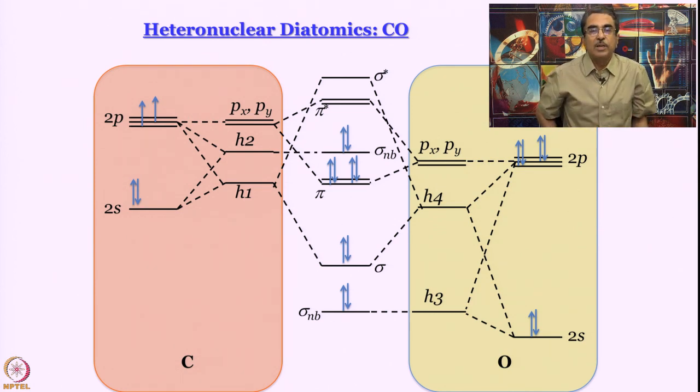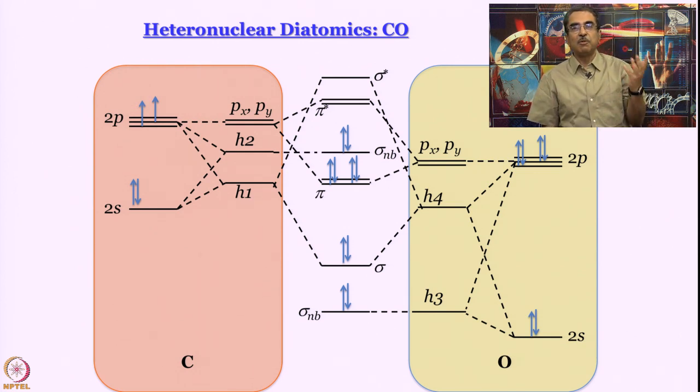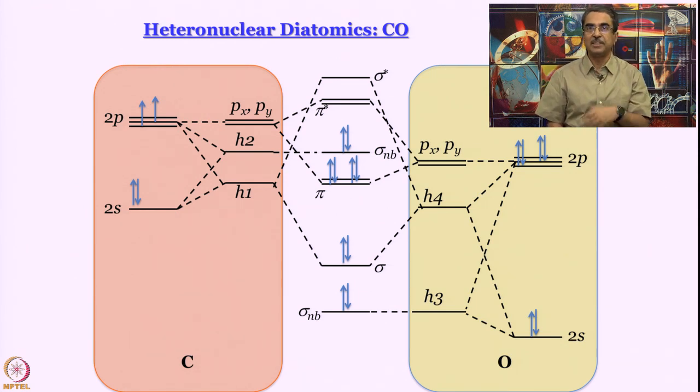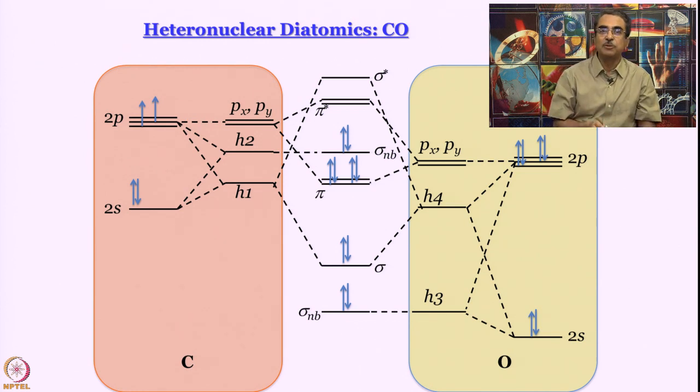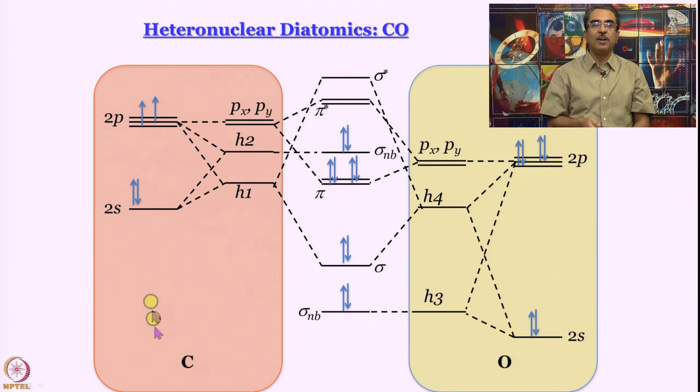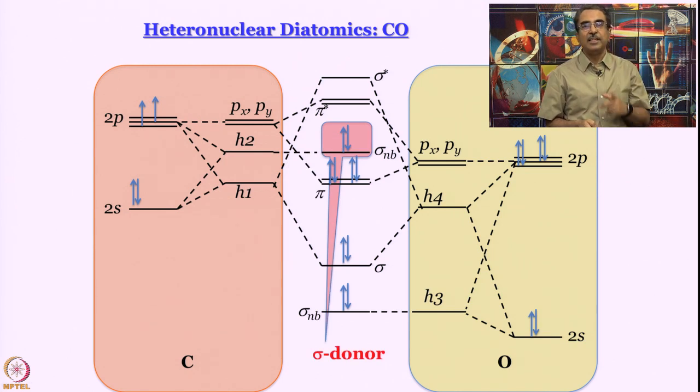Now, think, what is the sigma non-bonding? Remember HF, how some orbitals were lopsided on hydrogen and some orbitals were lopsided on F. Here also, the sigma nb is actually lopsided. Why? Because sigma nb is a non-bonding orbital on the carbon atom. So, it is very safe to say that these two electrons are actually on carbon and they are highly localized. That is why they make carbon atom the good sigma donor.